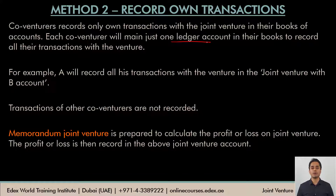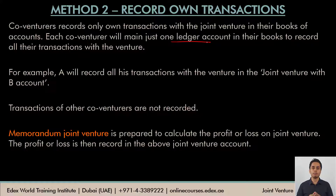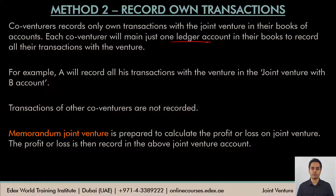Since none of the co-venturers record all transactions of the joint venture business, it is difficult to calculate the correct profit or loss based on their own entries. Hence, a separate memorandum joint venture account is prepared to calculate the profit or loss made on the joint venture. Using that profit, each co-venturer would record their own share of profit in their books, and not the other co-venturers' share.